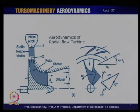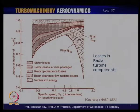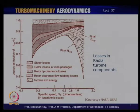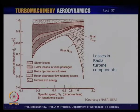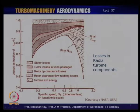Let us look at the issues involved in characterizing the radial inflow turbine and its design. This plot captures the losses in a radial turbine and its various components. Ideally, if the flow is isentropic there are no losses. The efficiency ratio shown here — the difference between ideal and real work — gives a flat characteristic, and then we have the losses. The first loss is in the stator, where losses actually increase with specific speed but then reduce as specific speed increases.